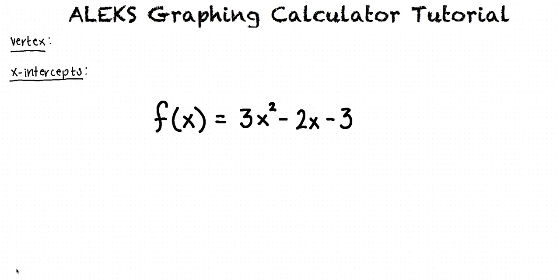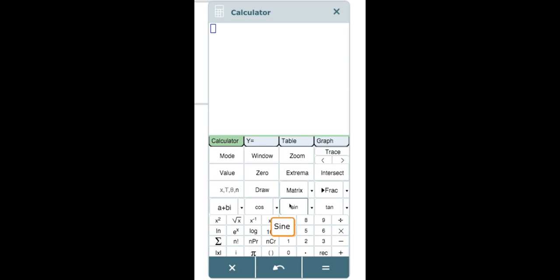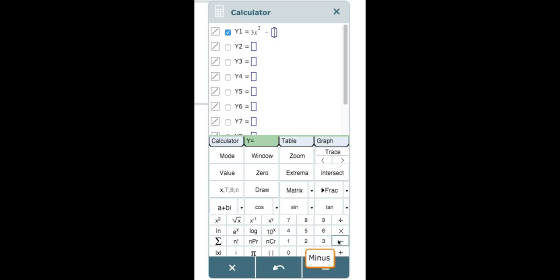First we will need to graph the function f(x). To do this we will click on the y equals button, enter 3x² - 2x - 3, and click on graph.